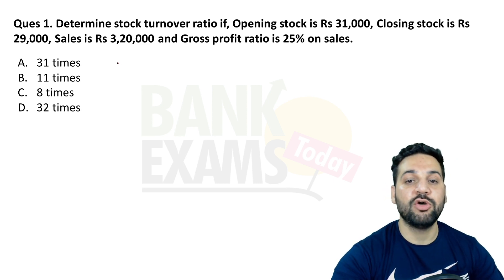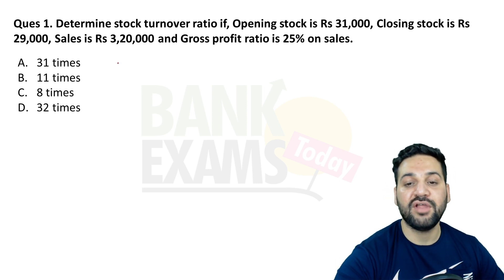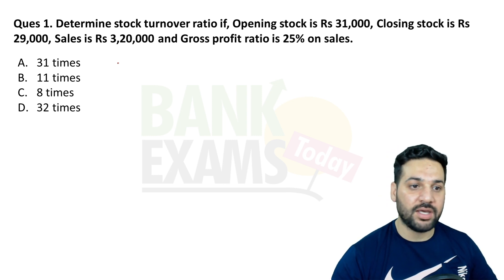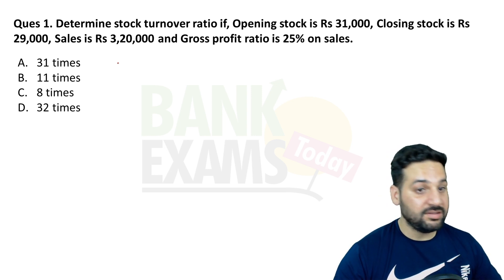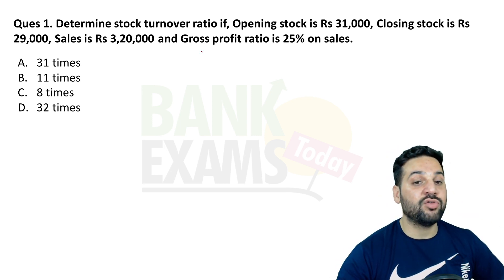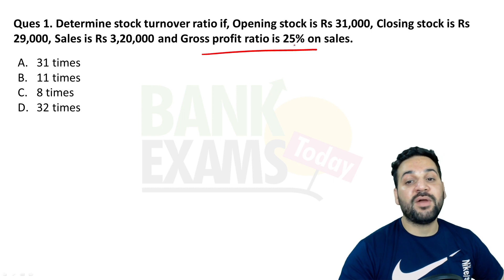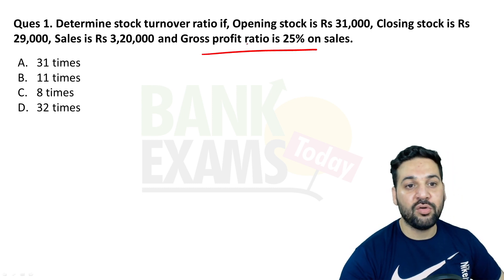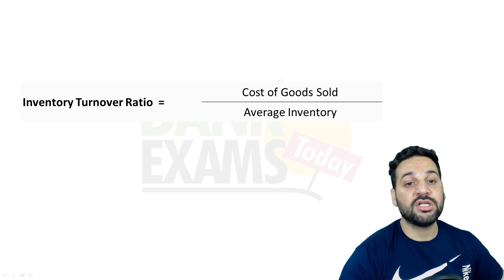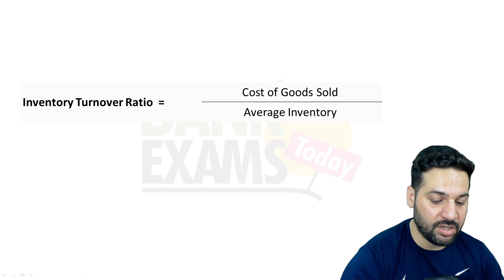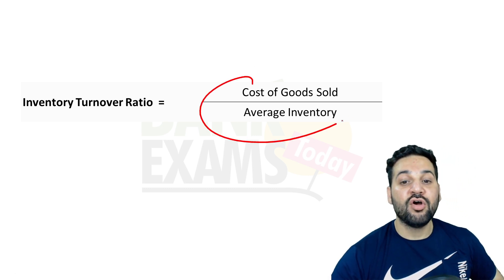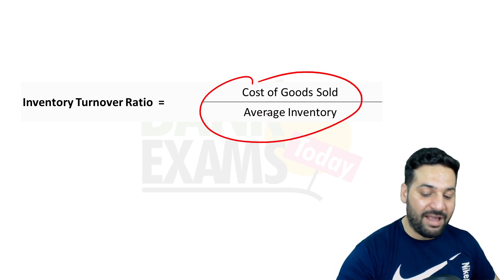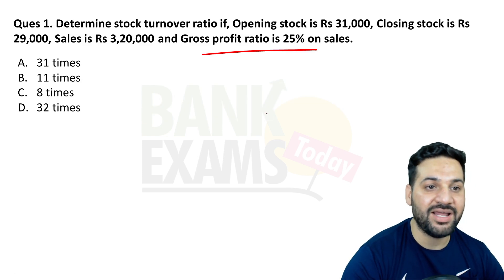Question number one: determine the stock turnover ratio if opening stock is 31,000, closing stock is 29,000, sales is 3 lakh and 20,000, and gross profit is 25% on sales. The formula for inventory turnover ratio is cost of goods sold divided by average inventory.